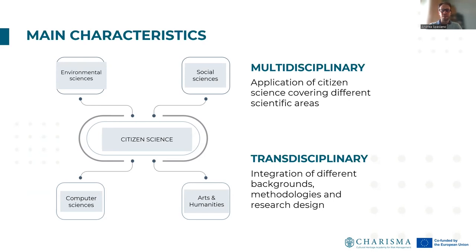Even if environmental and health observation sciences is the most recurrent field of application of citizen science, citizen science is also supported by social and computer sciences. Social sciences investigate qualitative aspects of citizen science related to social, cultural and economic background and impacts, while computer sciences are focused on finding technical solutions for citizen science projects, such as the use of social media, development of web platforms and user-friendly interfaces, supporting quantitative and social analysis of data collection with the integration of statistical methods.